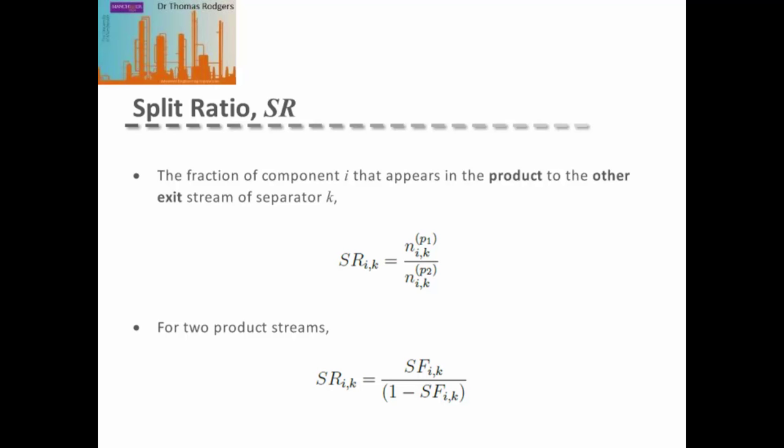We can write the split ratio in terms of the split fraction, as given by the equation at the bottom of this slide. You can see that this is essentially the ratio between our split fraction of component I in our first product stream divided by the split fraction of component I in the second product stream.